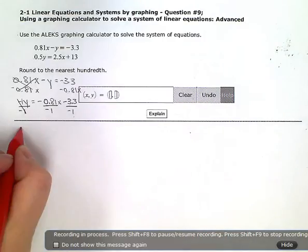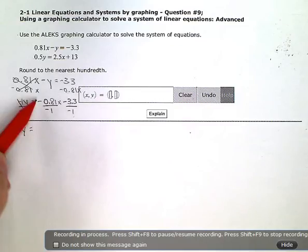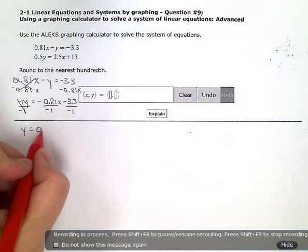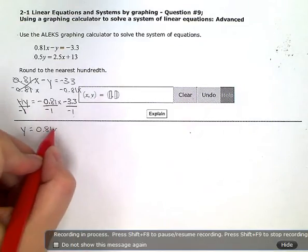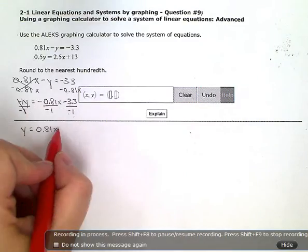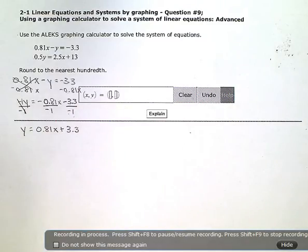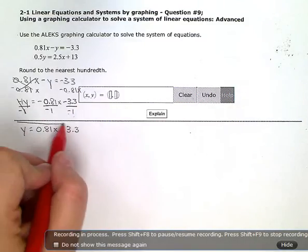So my first equation rearranges to Y equals a negative divided by a negative is a positive 0.81X. Same thing here, negative divided by a negative gives me a positive 3.3. So this is my first equation.